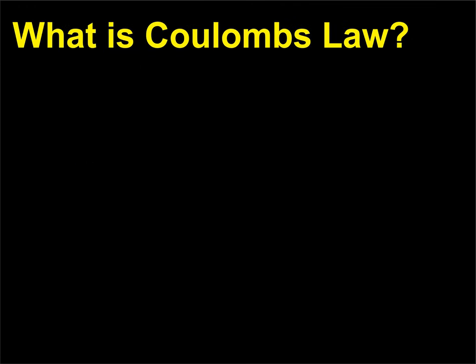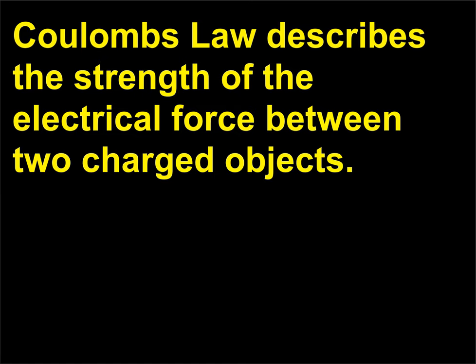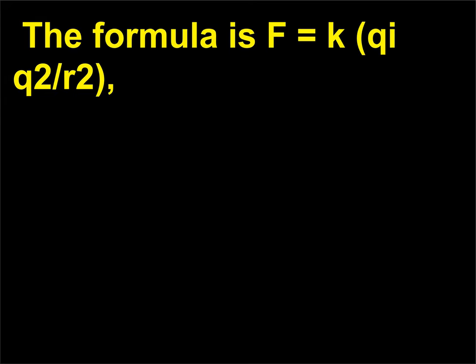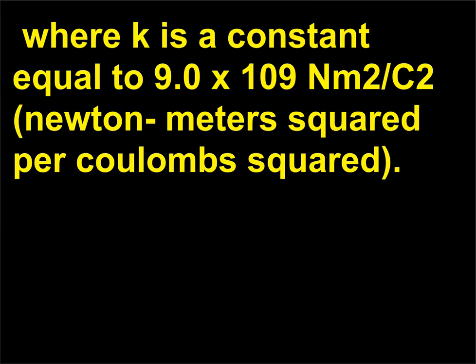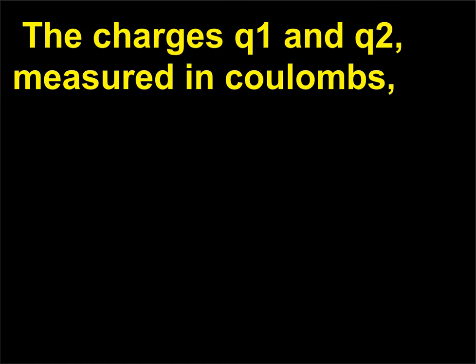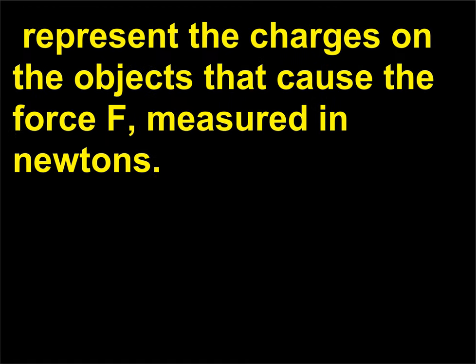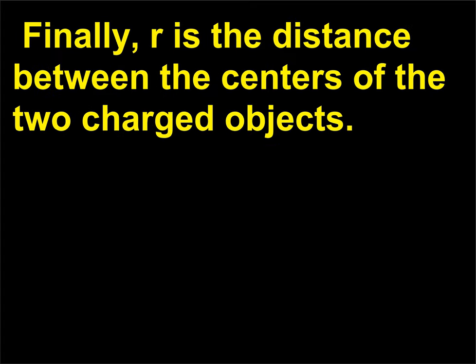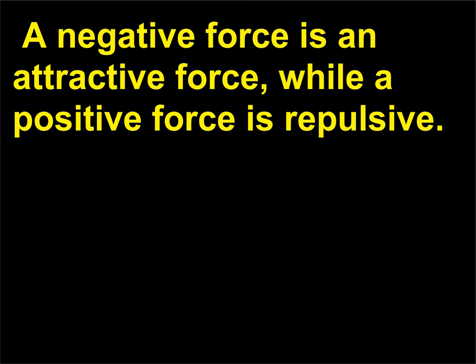What is Coulomb's law? Coulomb's law describes the strength of the electrical force between two charged objects. The formula is F = k × q₁q₂ / r², where k is a constant equal to 9.0 × 10⁹ N·m²/C² (newton meters squared per coulombs squared), q₁ and q₂ are the charges on the objects measured in coulombs, F is the force measured in newtons, and r is the distance between the centers of the two charged objects. A negative force is an attractive force, while a positive force is repulsive.